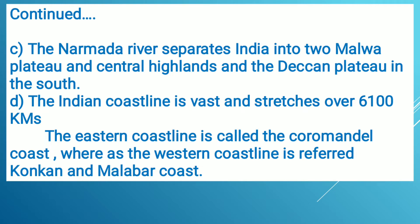The Indian coastline is vast and stretches over 6,100 kilometres. The eastern coastline is called the Coromandel coast, whereas the western coastline is referred to as the Konkan and Malabar coast.